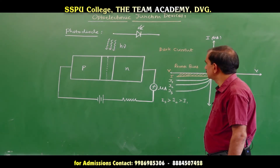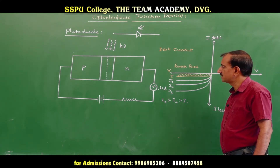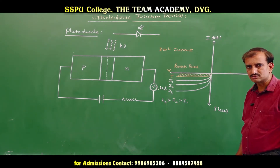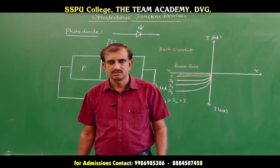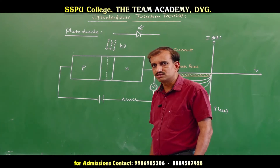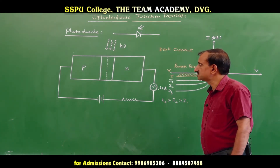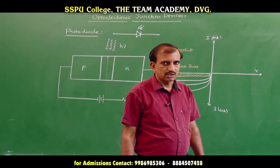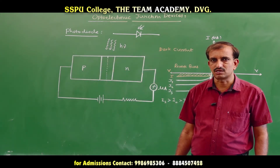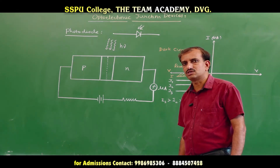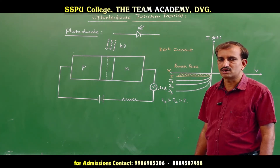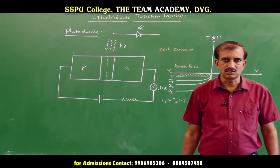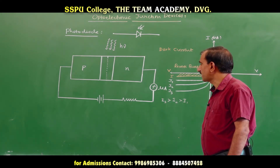Photodiodes are used to detect light falling on them and hence are used as light detectors for both visible and invisible light. We can also measure the intensity of incident light using a photodiode. Photodiodes can be used as light switches: when light is incident on the photodiode, current flows and it is in the ON state; when no light is incident, no current flows and it is in the OFF state.